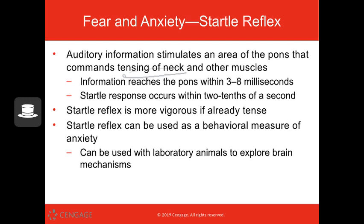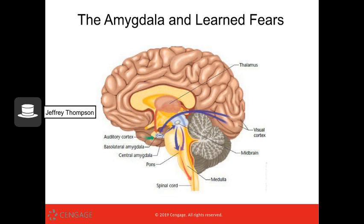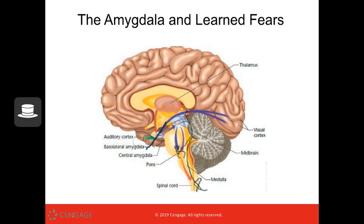That information reaches the pons within three to eight milliseconds, which is very quick. The startle response occurs within two-tenths of a second — it has to be quick because if something is about to attack you, you want to make yourself as safe as possible. If you are already tense, it's going to be a much more vigorous startle reflex, and we can use this to measure anxiety. We get auditory information, it goes to the amygdala, into the midbrain, into the pons, and then sends the signal out for the startle reflex. Any issues with this pathway affect our ability to learn fears and respond to things.